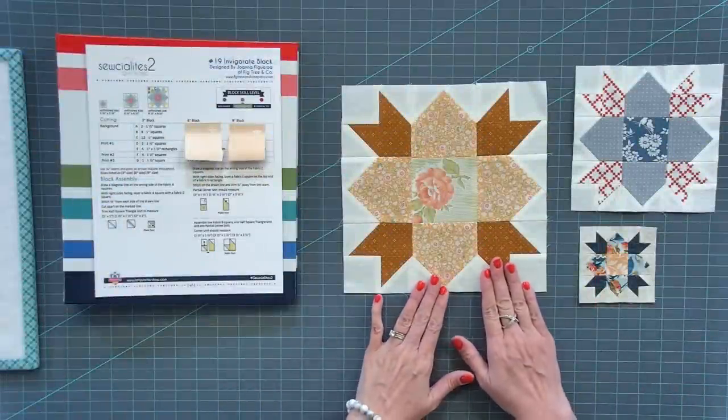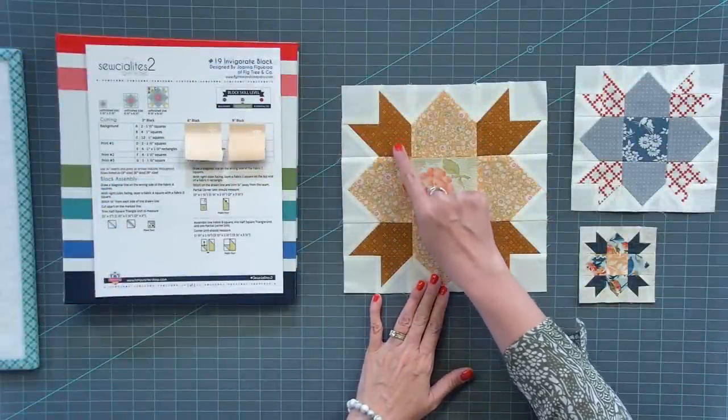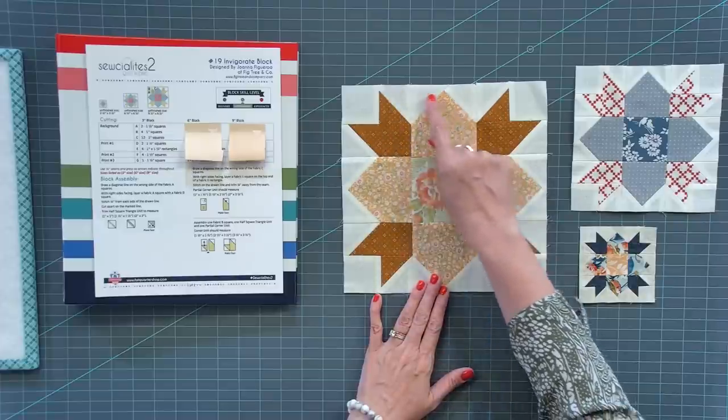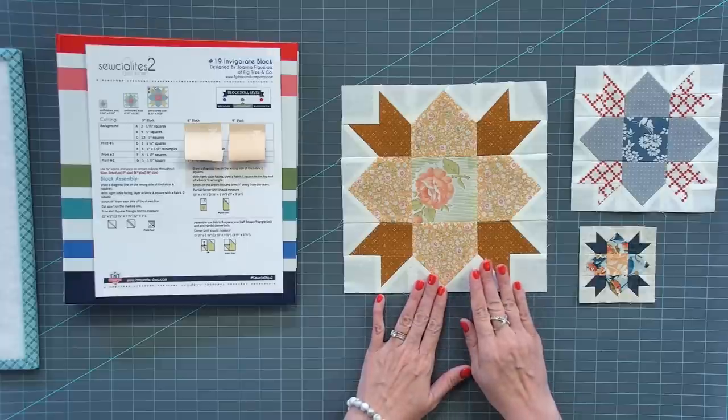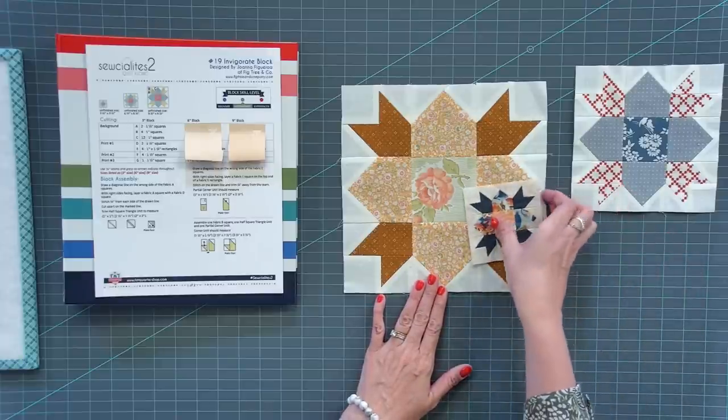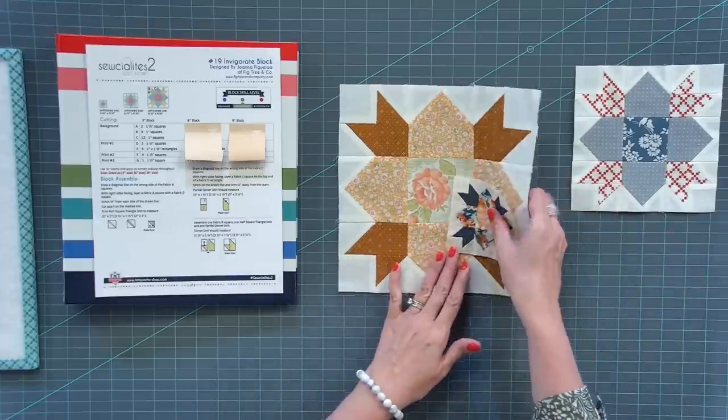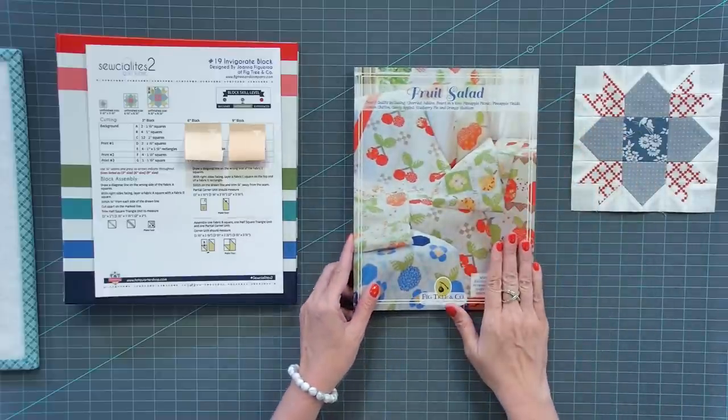In this block, this is a half square triangle, this is a rectangle with a corner square, these are corner squares, and this is just a solid. Super easy. Now I'm gonna be making the three inch version, so we're gonna talk a lot about starching and getting your fabric right. But I wanted to show you, and this is kind of a tease that we're gonna talk in more detail about next week.